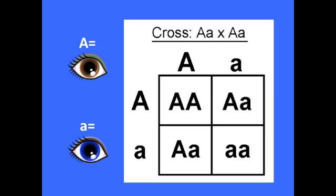This is just an example of the Punnett square to give you a better understanding. Notice that the dominant allele is always represented first. This is how we can determine the probability of a child receiving a certain trait. Say that capital A equals brown eyes and lowercase a represents blue eyes. The probability of a child having brown eyes is three-fourths, because three out of four squares have a capital A first, which is the dominant, or brown eyes. The probability of having blue eyes is only one-fourth.